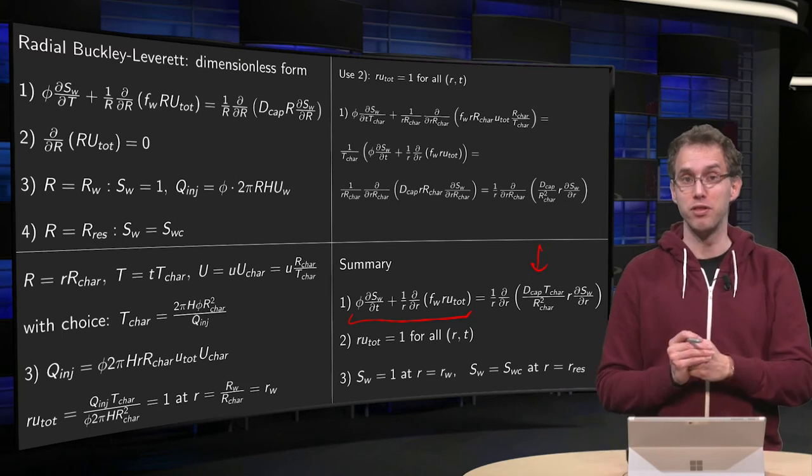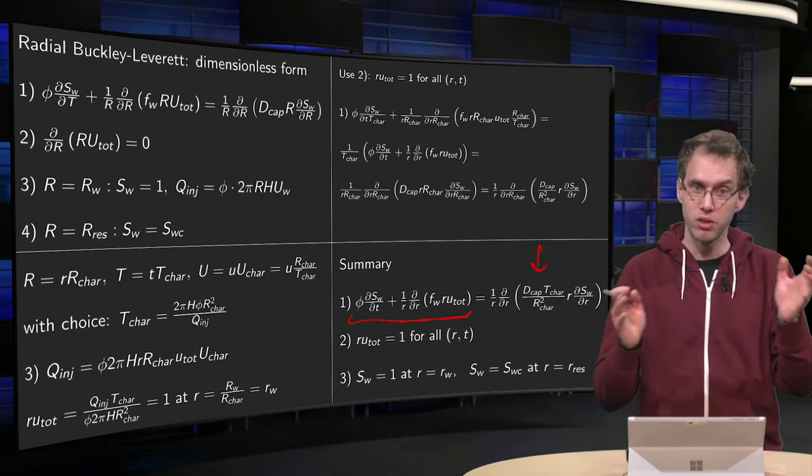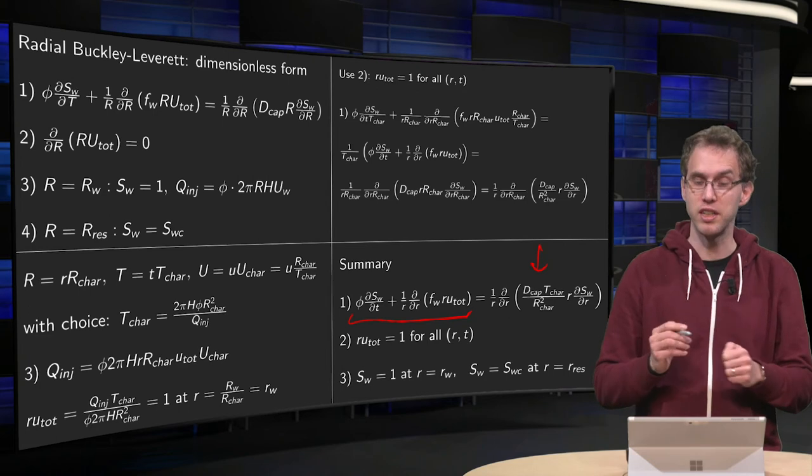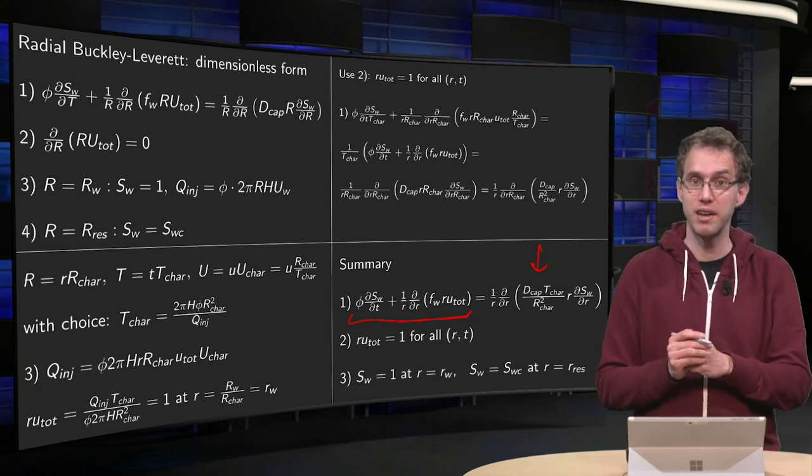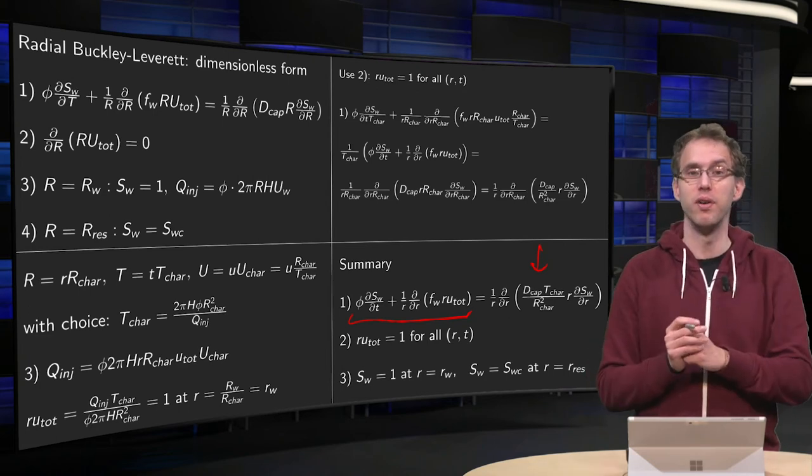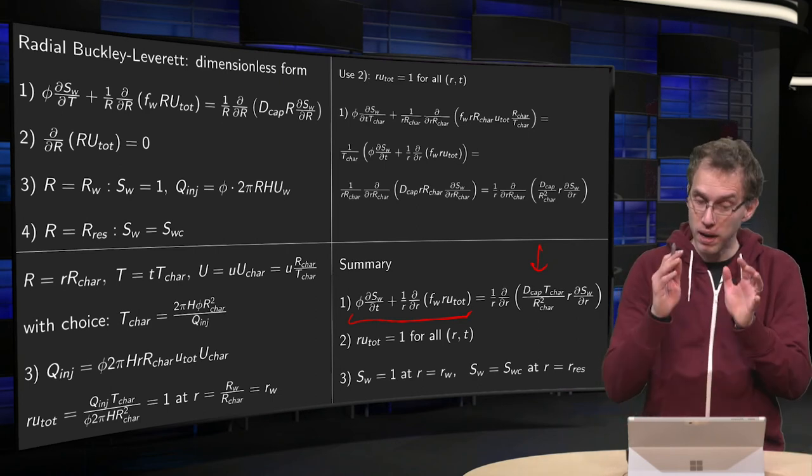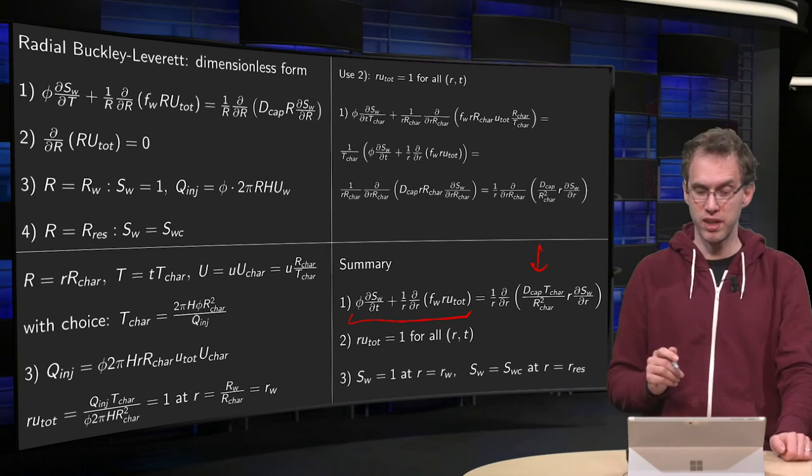Now, if your capillary diffusion is constant, which is often used as an approximation, then this D-cap T-car over R-characteristics squared has a name. It's called 1 over the Peclet number. So, it's a very well-known dimensionless number.